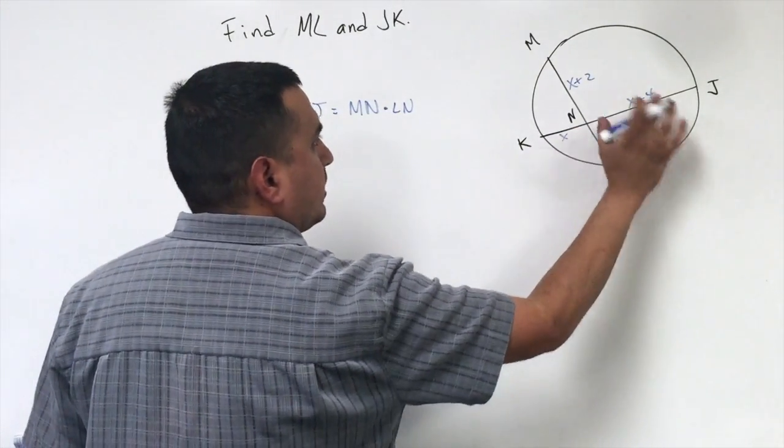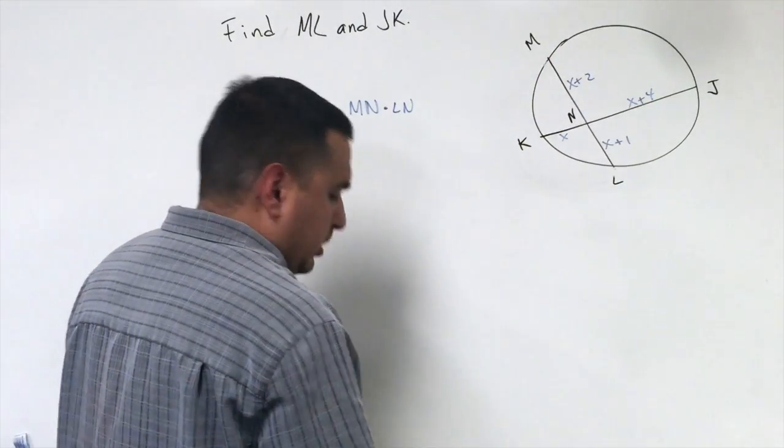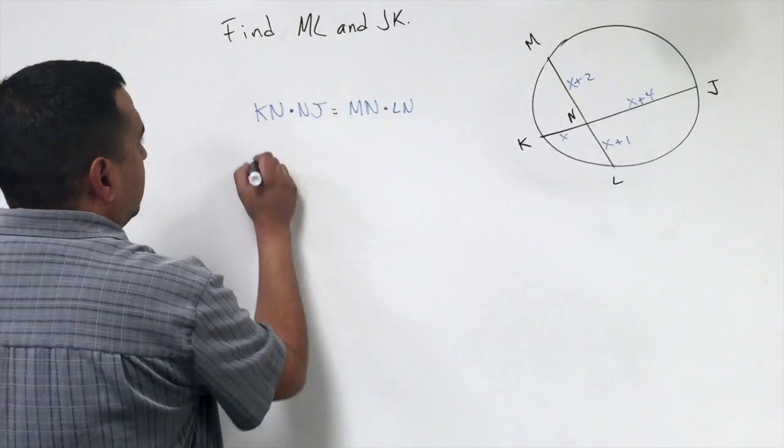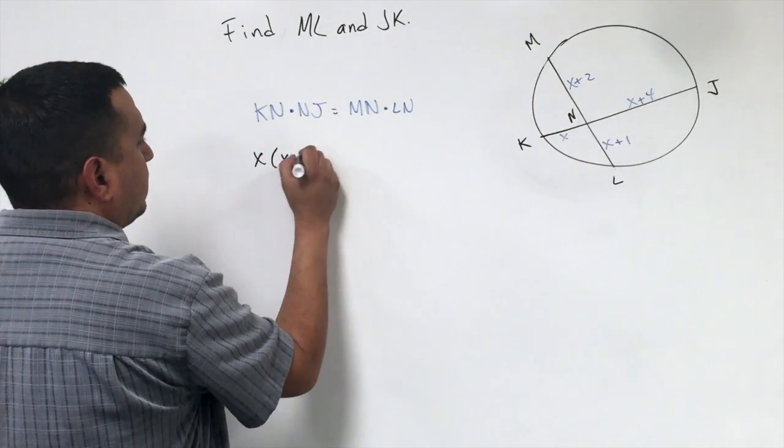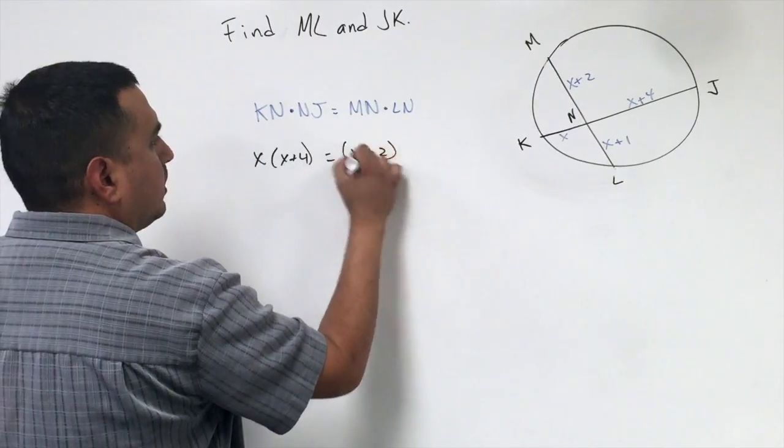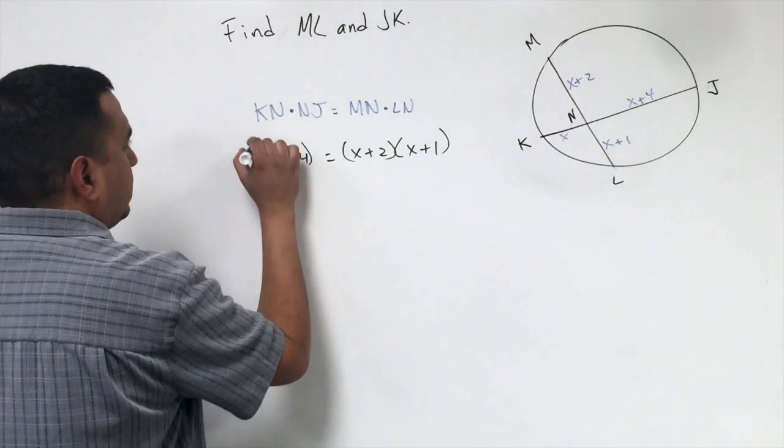this piece times this piece is equal to this piece times that piece. So let's substitute this stuff in. So I got x times x plus 4 is equal to x plus 2 times x plus 1. Okay, so we have to distribute here.